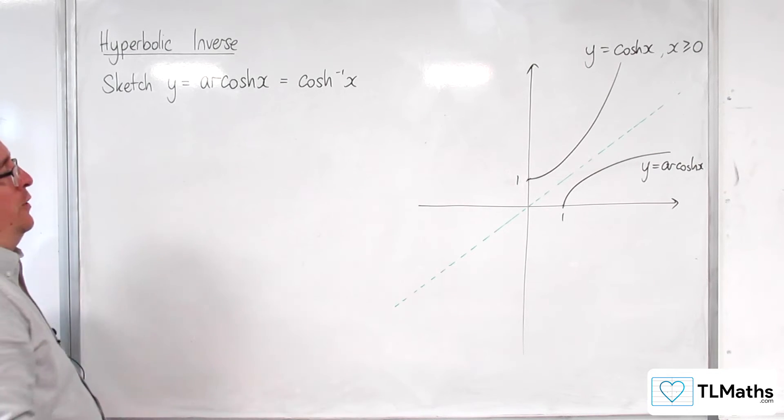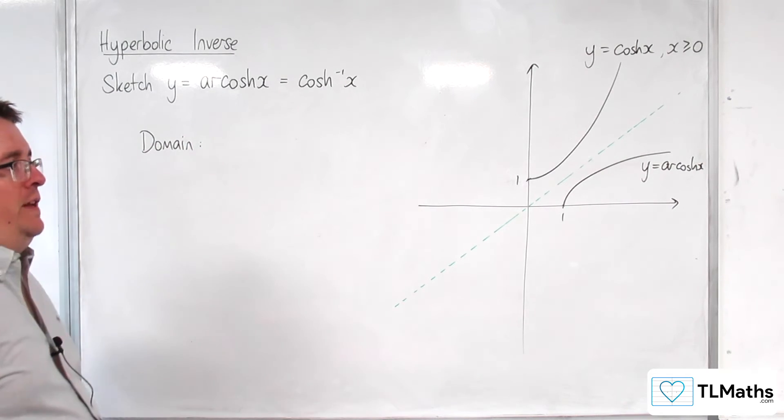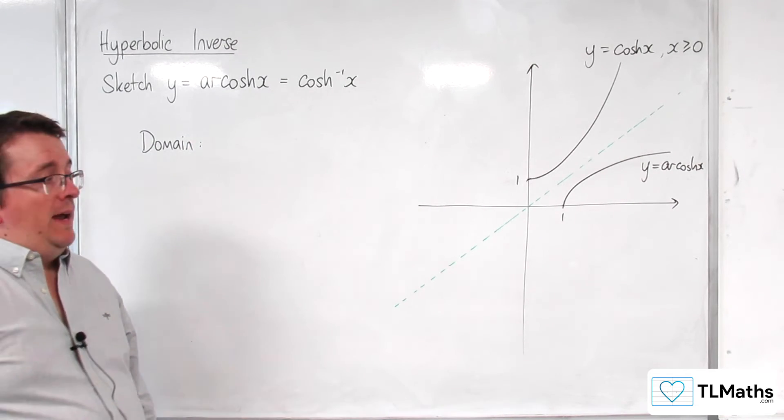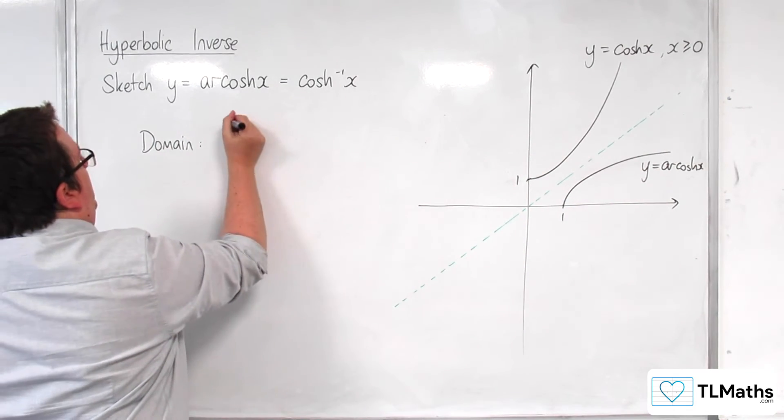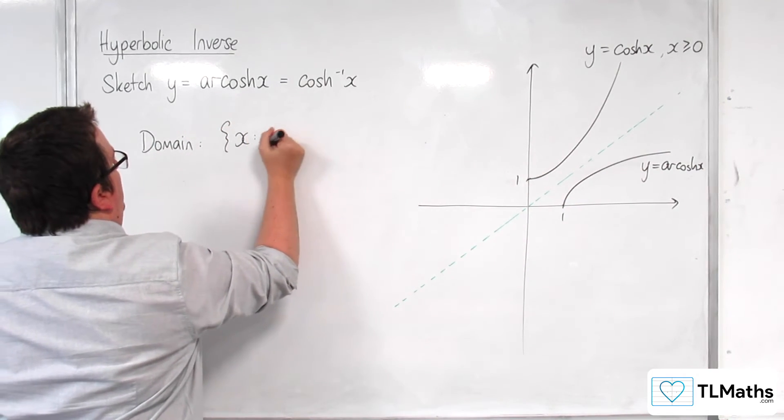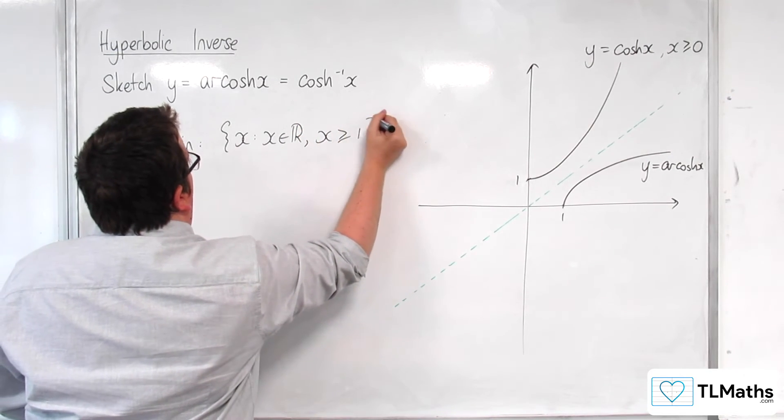When we look at the domain and range of the inverse function, the domain must be from 1 onwards. So x is such that x belongs to the real numbers, x is greater than or equal to 1.